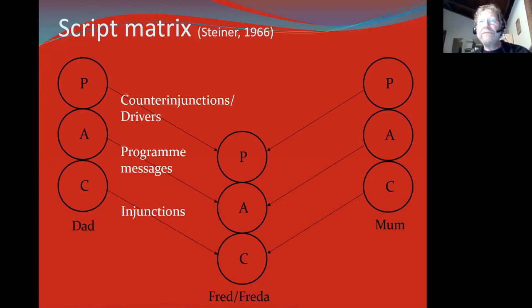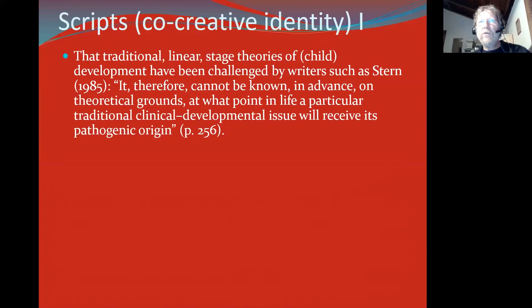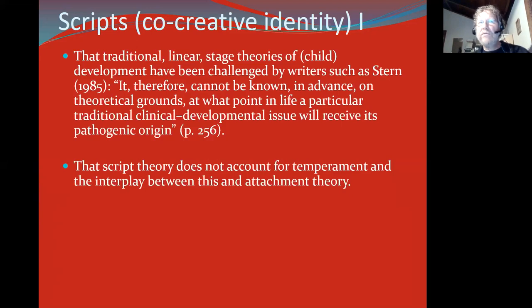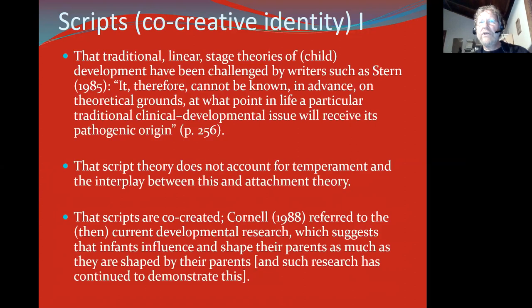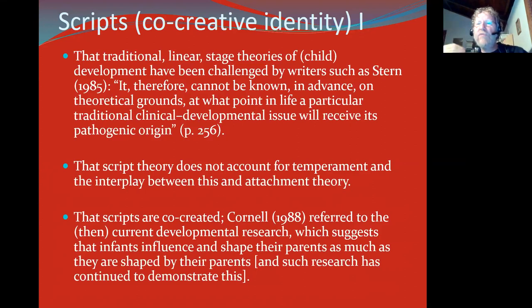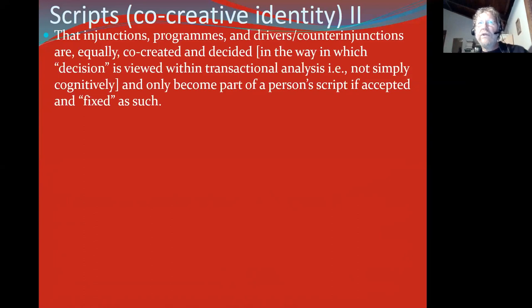This is a traditional script matrix from Steiner 1966. We have some issues with that — we were critical of it along the same lines that people like Fanita English and Bill Cornell were challenging traditional linear stage theories. We also agreed with Bill Cornell that script theory doesn't account for temperament. Scripts are co-created: we know from developmental psychology that infants influence the mother, there's a sense of co-regulation rather than one-way regulation. So we argued that injunctions, programs, drivers, et cetera, are equally co-created, and that the decision is co-created.